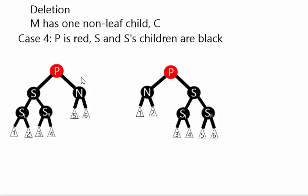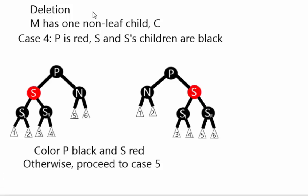Case four is the parent is red, the sibling and both of its children are black. What we're going to do is color the parent black and the sibling red. If this wasn't the case, we're going to proceed on to case five. If we did this change, we're actually done.